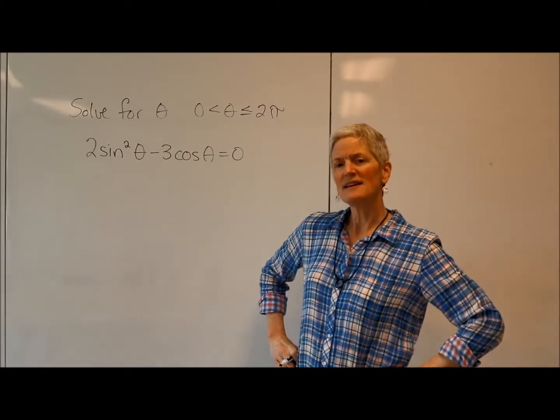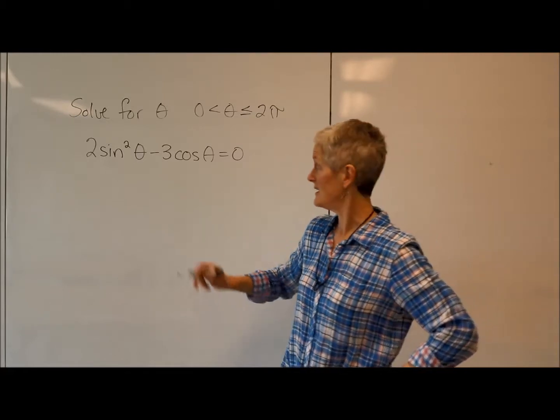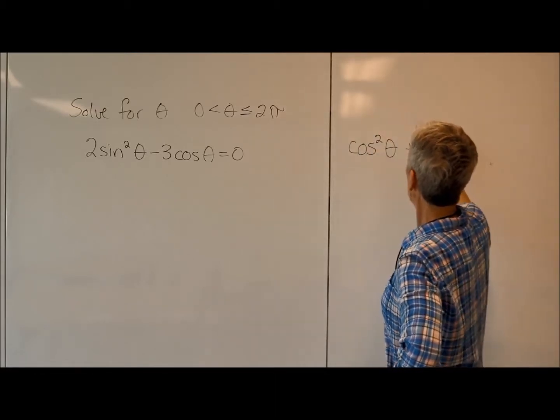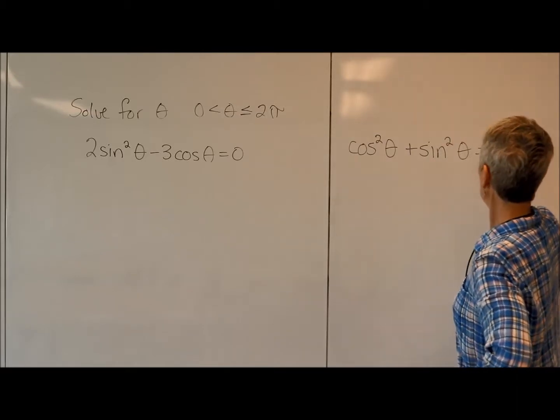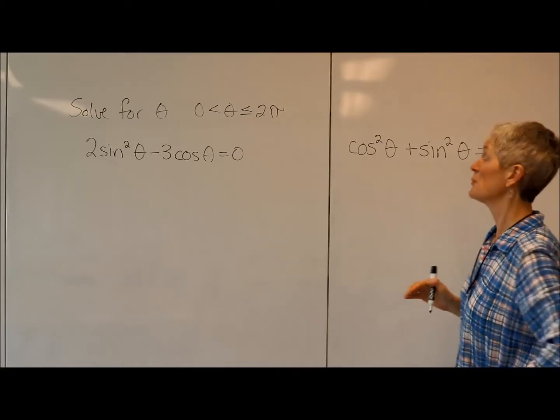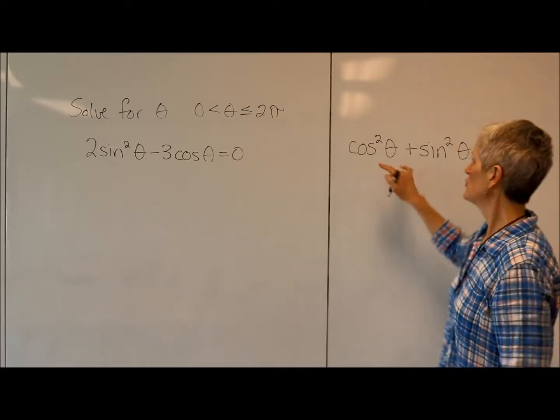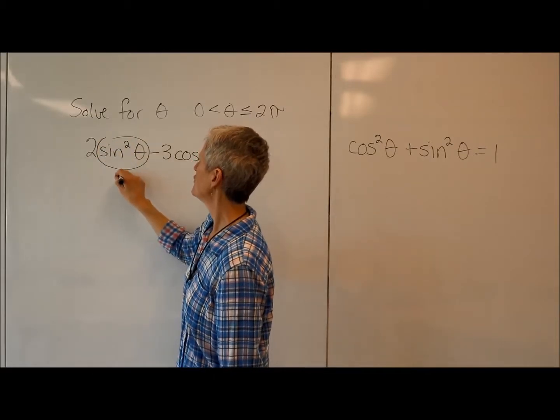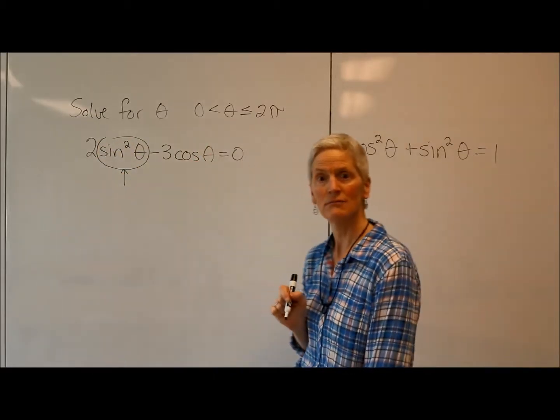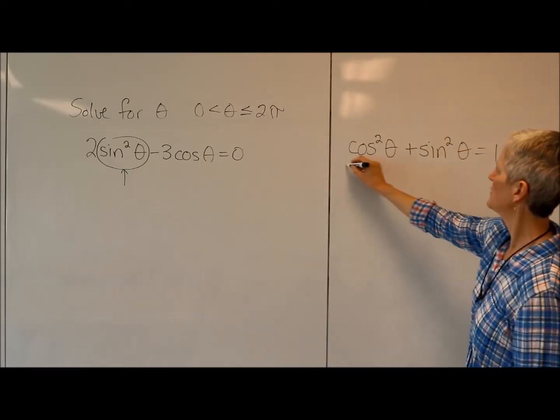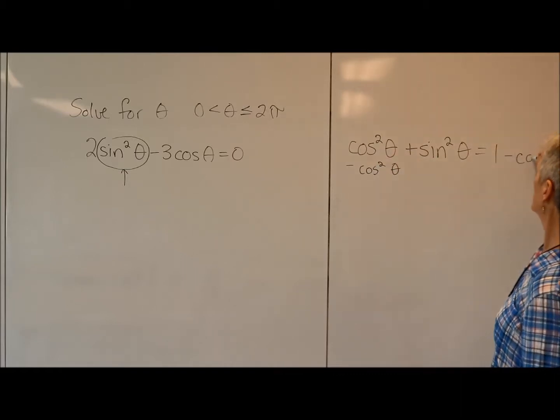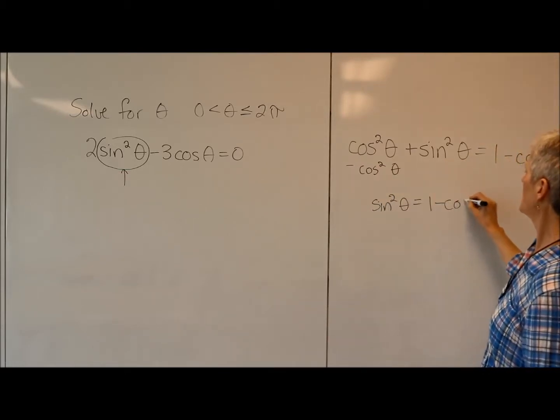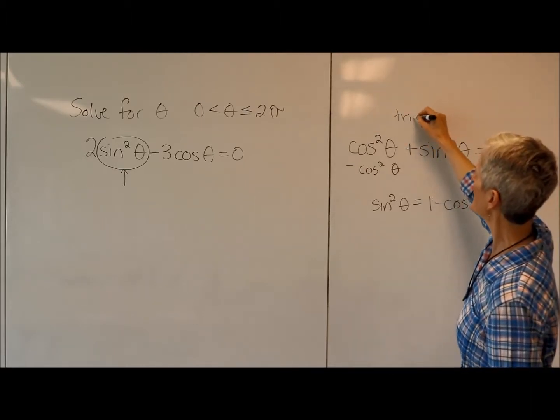So the trig identity that comes to mind for me is the Pythagorean trig identity. Cosine squared theta plus sine squared theta equals 1. That's just a² plus b² equals c². We've talked about that in a previous video. This gives me a beautiful relationship between cosine squared and sine squared. And I'm thinking I could use it to come up with an expression to substitute in for sine squared theta. So if I subtract cosine squared theta from both sides here, so now I have sine squared theta equals 1 minus cosine squared theta. This is just one of my trig identities that I know.